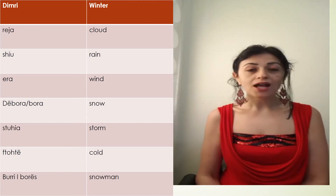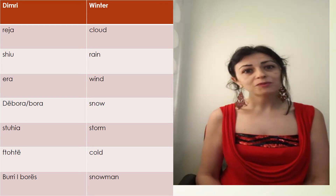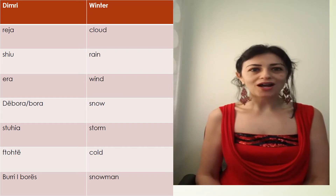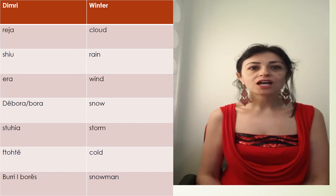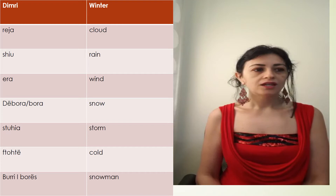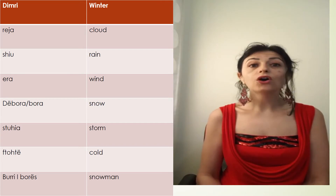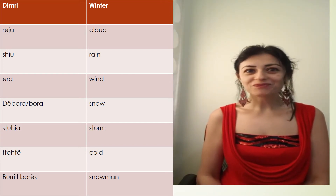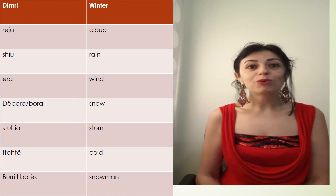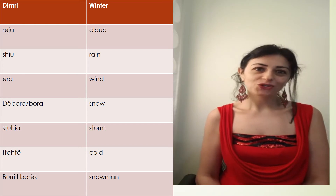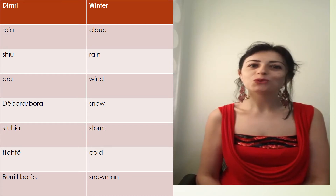Snow — we have two words for snow: dhëbora and bora. The storm is stuhia. Cold is ftohtë. The snowman is buri i borrës. Because you know that bora is the snow and buri is the man, so snowman is buri i borrës.